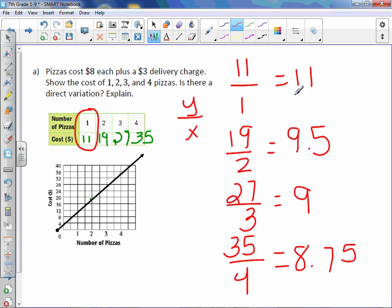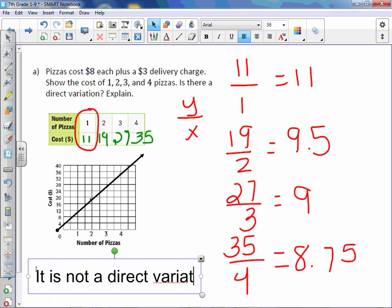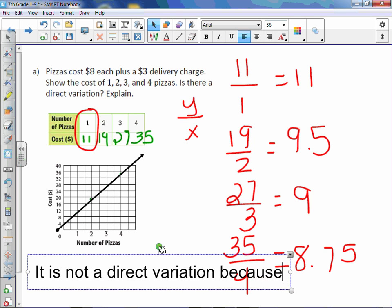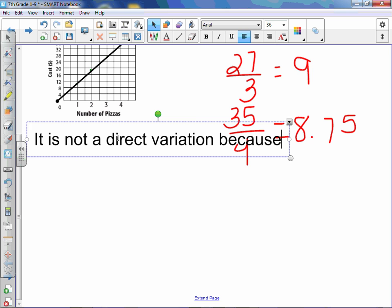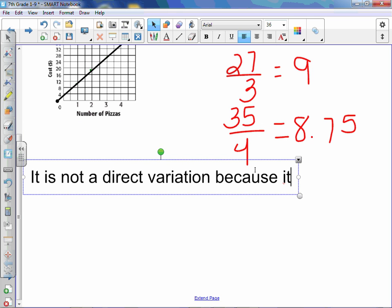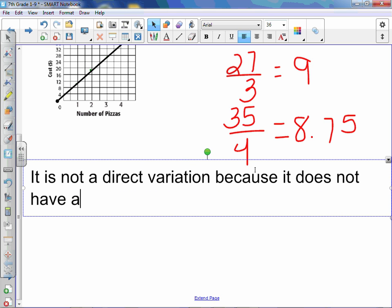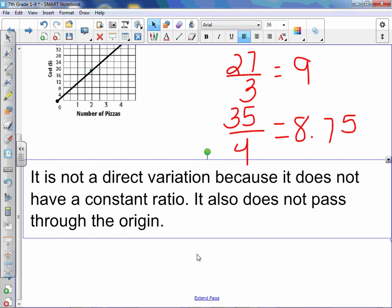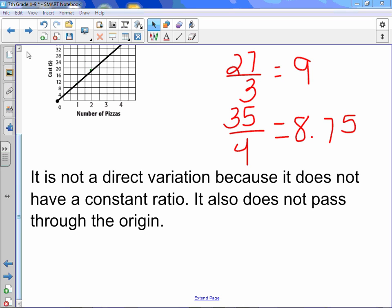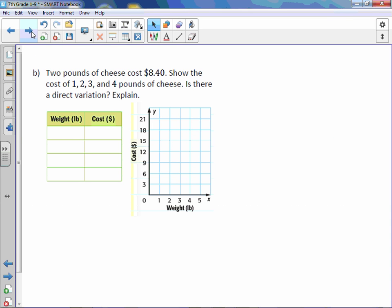So we can also see with the numbers that it is also not a direct variation because it doesn't have a constant rate of change, or not a constant rate of change, it doesn't have a constant ratio. So our answer would be it is not a direct variation because it does not have a constant ratio. It also does not pass through the origin.